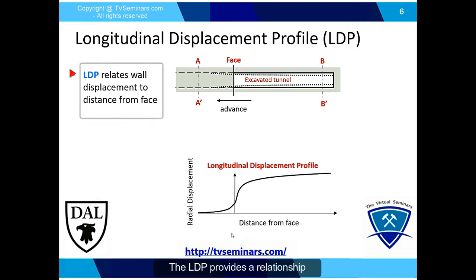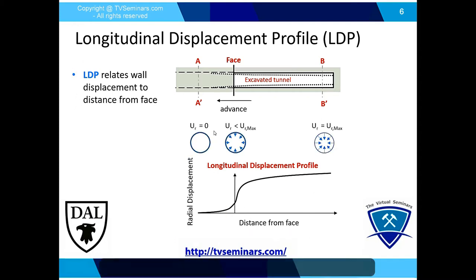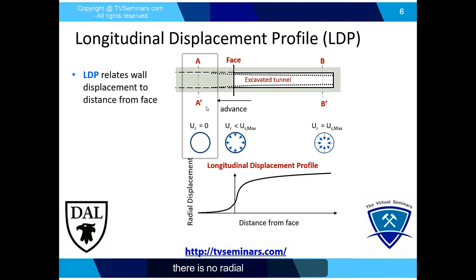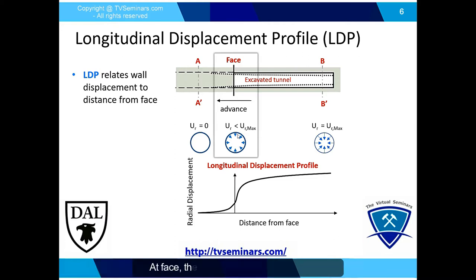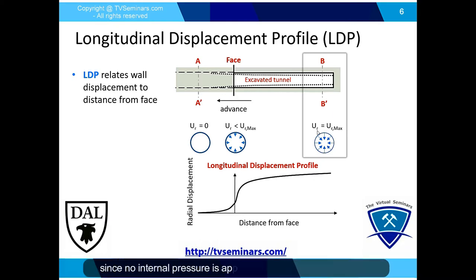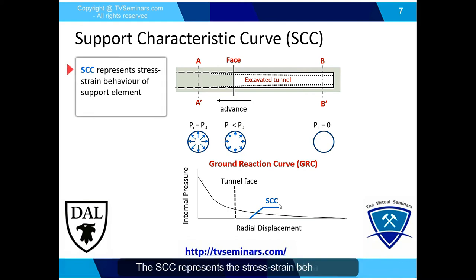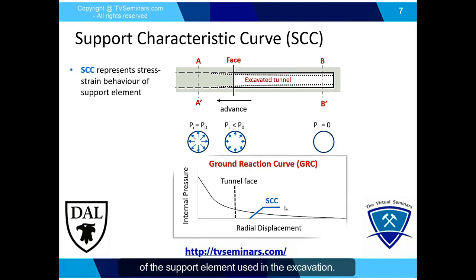The LDP provides a relationship between wall radial displacement and the distance from the tunnel face. As shown at section AA' ahead of the tunnel face, there is no radial displacement because the internal pressure equals the in-situ stress. At the face, radial displacement increases as internal pressure is less than in-situ stress. Finally, at section BB' where there is no face effect, displacement reaches its maximum value since no internal pressure is applied to the excavation boundary.